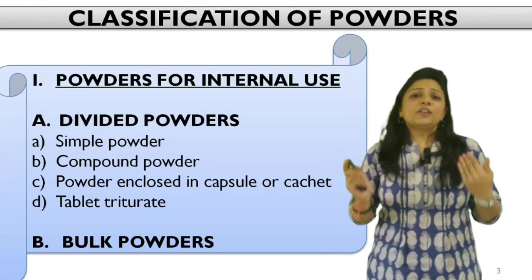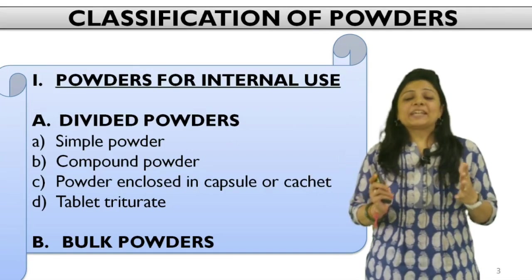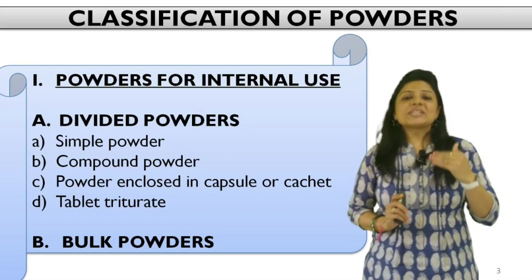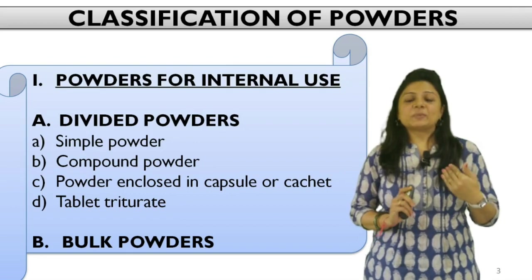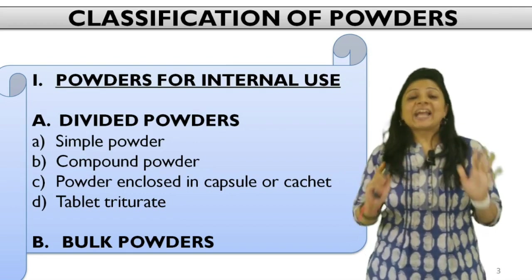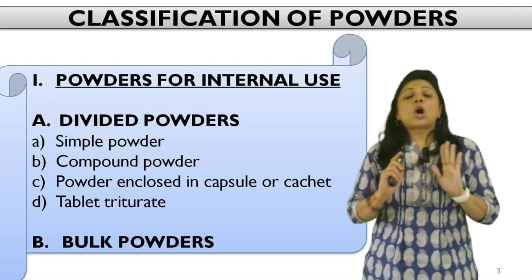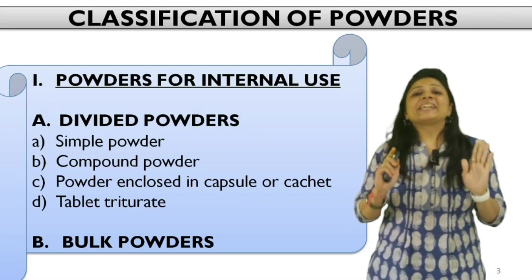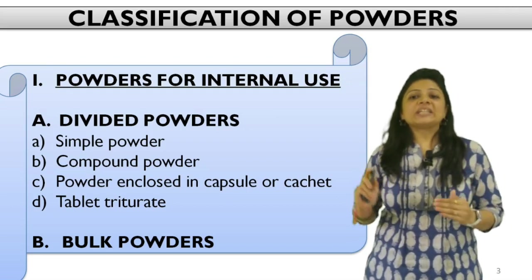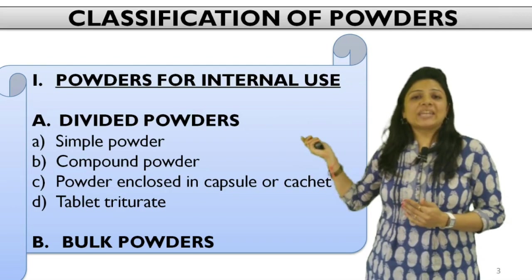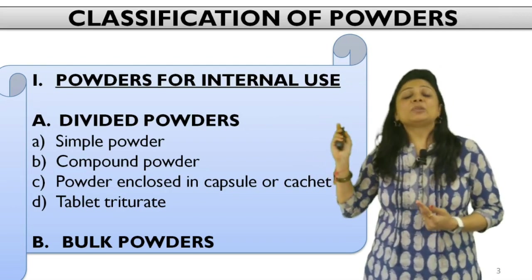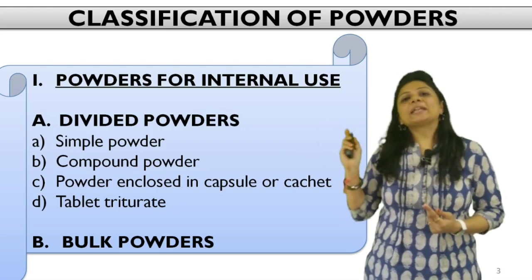If you classify the powders, the classification is based upon whether you want to use that powder internally — that means taken orally — or applied externally either on the skin or on any of the body cavities. The first class is powders for internal use, and as you can see, internal use powders are of two types: either divided powder or bulk powder.